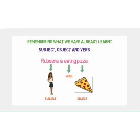Subject, object, and verb in a sentence can better be understood with the help of this sentence: 'Rubina is eating pizza.' In this sentence, who is the performer of the action? Obviously Rubina — Rubina is the subject. What is her action? She's eating, so eating is the verb. And what is the receiver of this action? Obviously pizza, so pizza is the object. The subject always comes at the start of the sentence, while the object occurs at the end and is usually the receiver of the action.